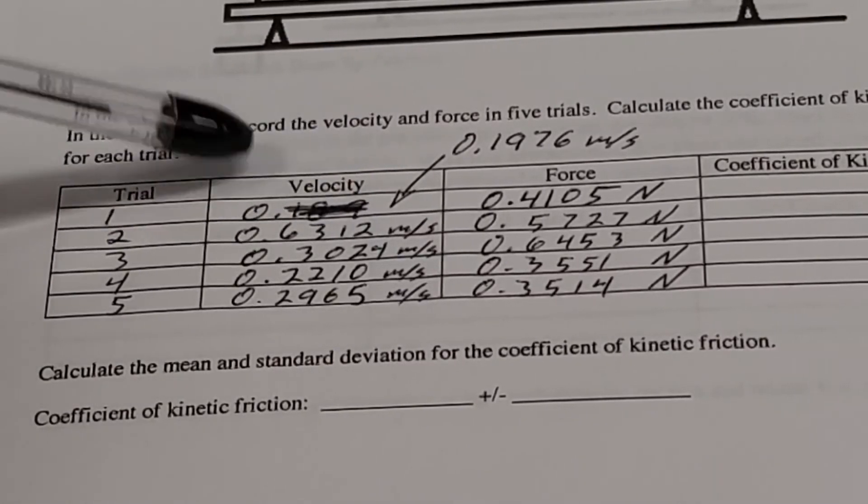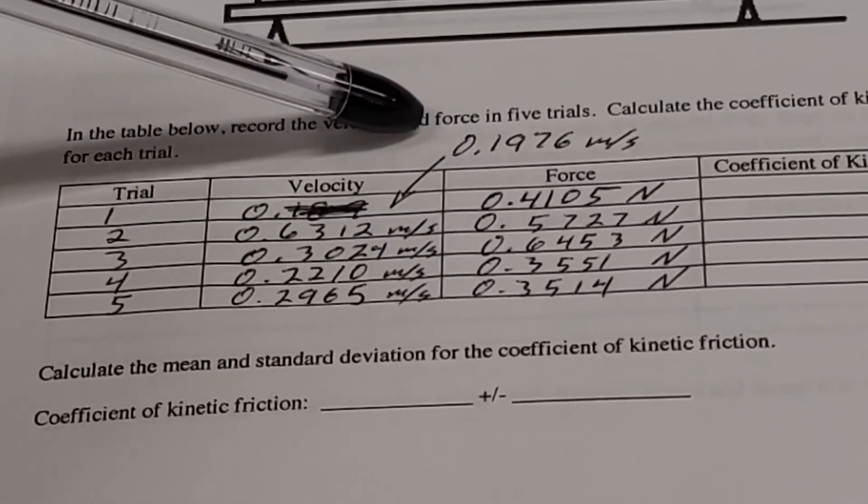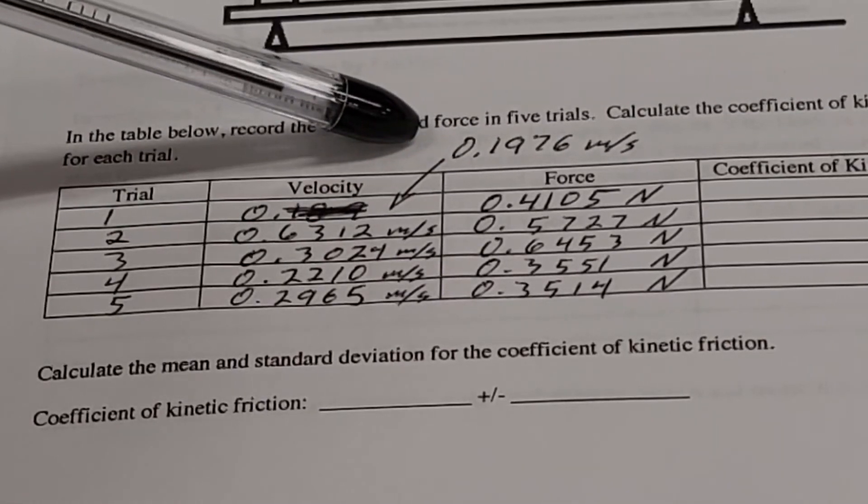I started copying down the wrong number on the first velocity, so that value is up here. It's 0.1976 meters per second.